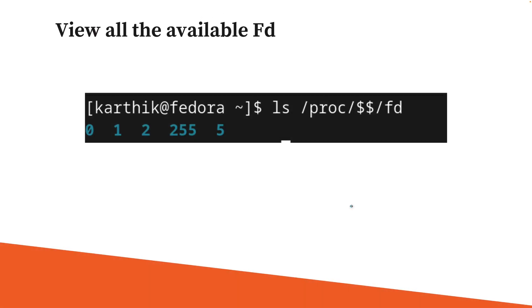In order to view all available file descriptors within our operating system, we can use the command: ls /proc/$$/ fd to see all the file descriptors. As you can see, there is a file descriptor of 0, 1, 2, which is the standard file descriptor, and it ranges up to 255. Any number in between can be a custom file descriptor used by other processes.